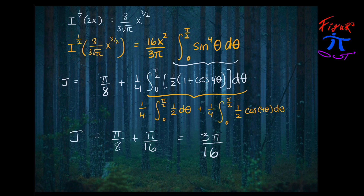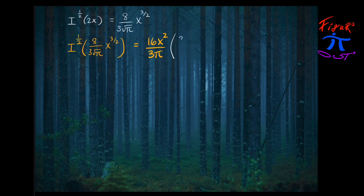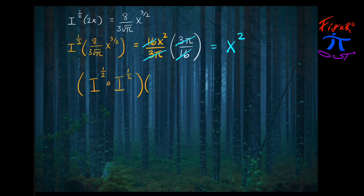That integral result of 3π/16, multiplied by the constant 16x² over (3π) in front, gives x squared through cancellation. So the composition of two half-integrals of 2x amounted to the same thing as the whole integral of 2x, which is x squared. So it really does work.